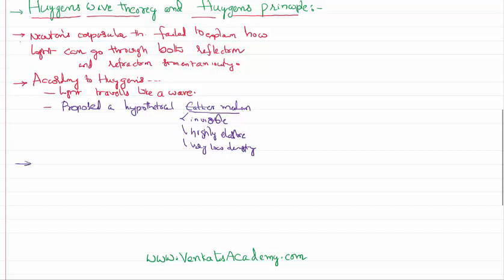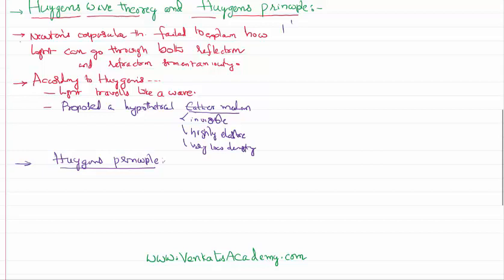To explain further how light travels like a wave in a given medium and how it is able to travel a very long distance, Huygens proposed a principle called Huygens principle. Let us try to understand the meaning of this Huygens principle by drawing a small diagram.